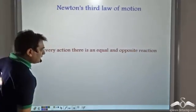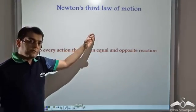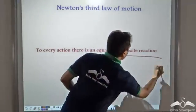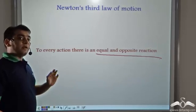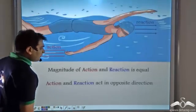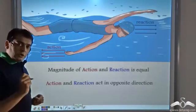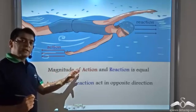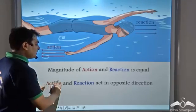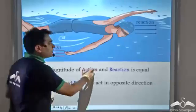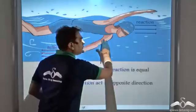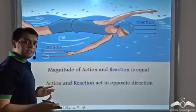To sum up these experiments, we have Newton's Third Law of Motion, which states that for every action, there is an equal and opposite reaction. Always note that the magnitude of the action and reaction are equal, and the action and reaction are in opposite directions. When the swimmer was pushing the water backwards, the water was pushing the swimmer forwards.